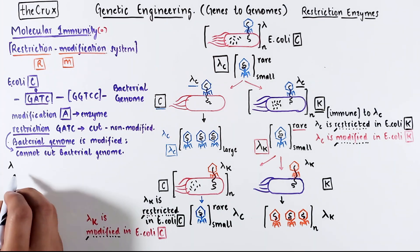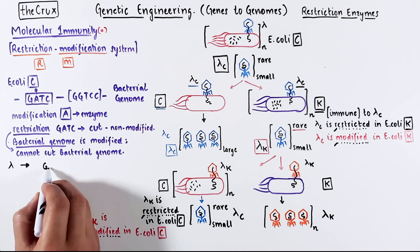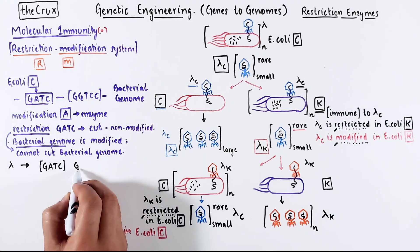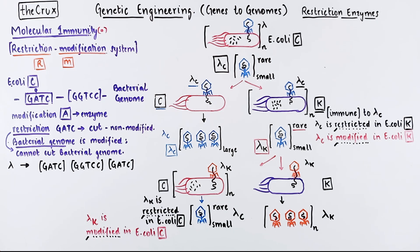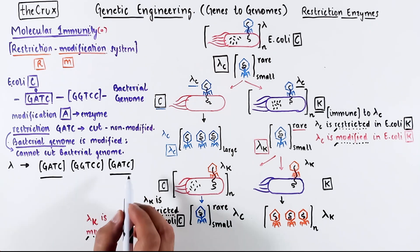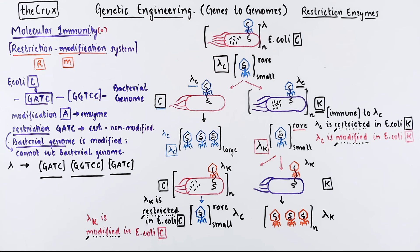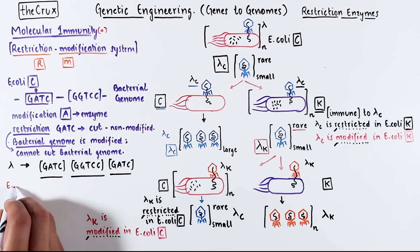So when a lambda phage infects the E. coli C, the viral DNA will be chopped up at the GATC because the GATCs are not modified. E. coli C does not care about GGTCC. But let's turn our attention to E. coli K.